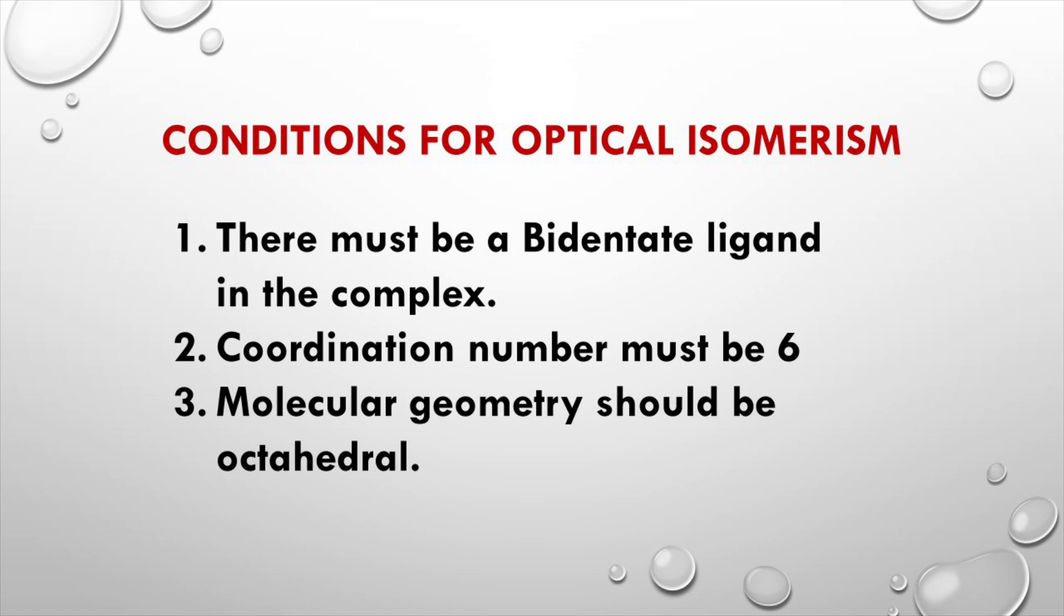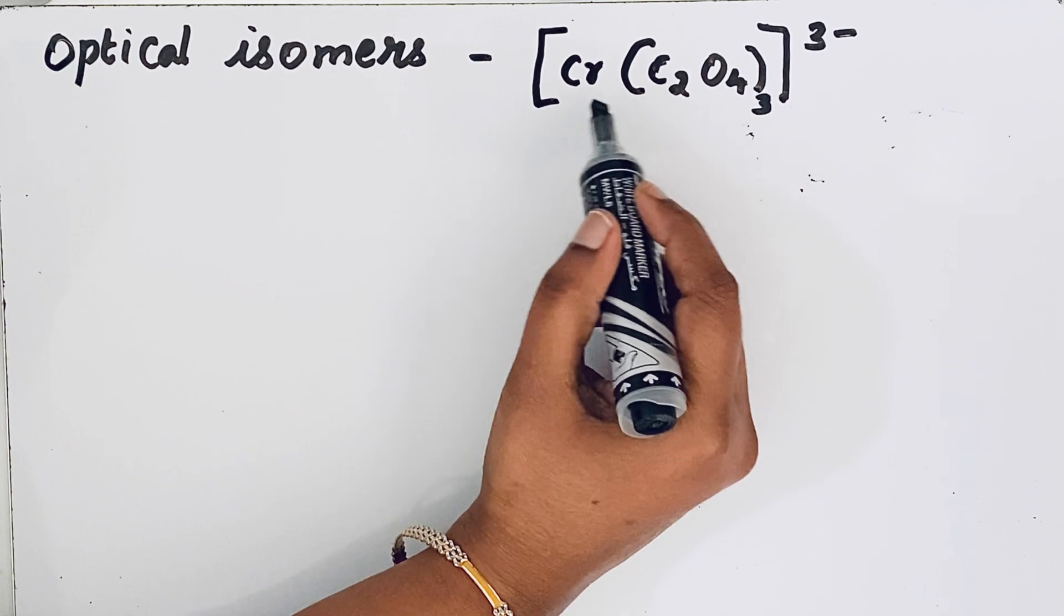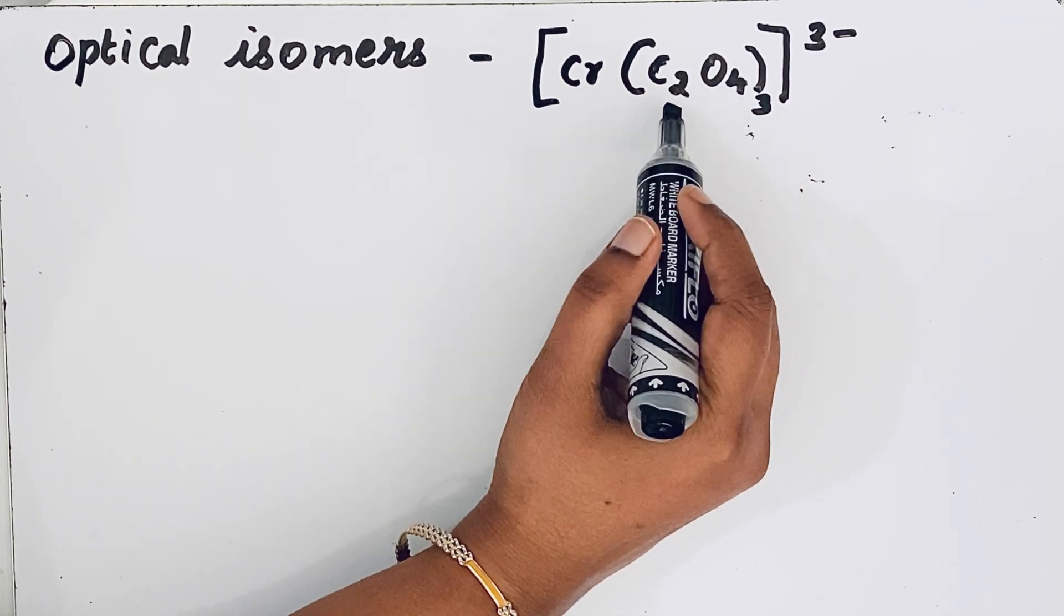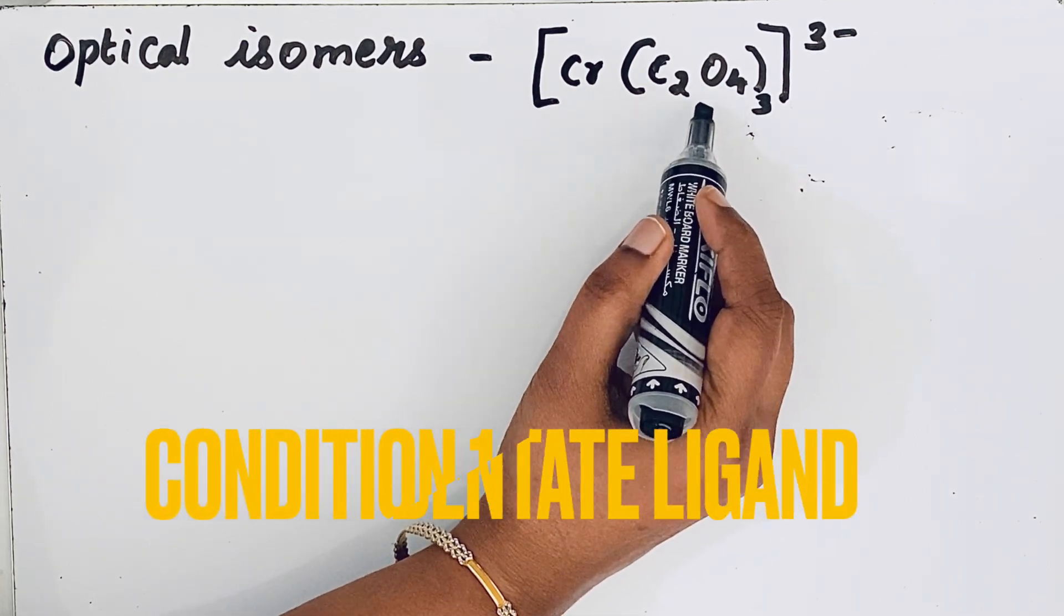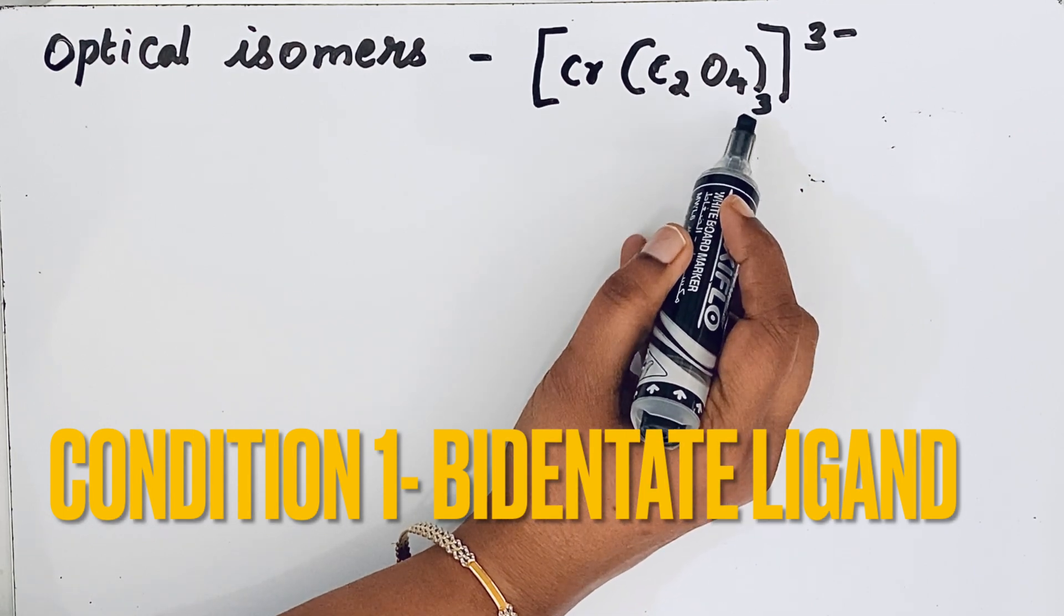So first let us analyze the ligand. This is the central atom. C2O4 is a ligand. This is the bidentate ligand, oxalate ligand.